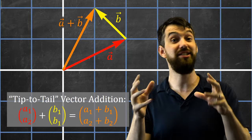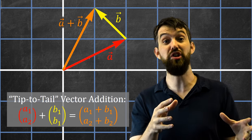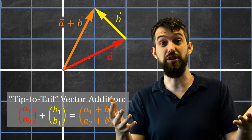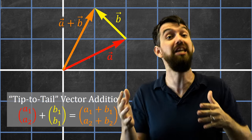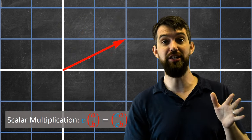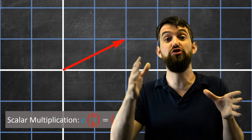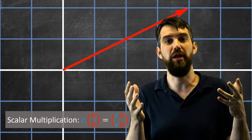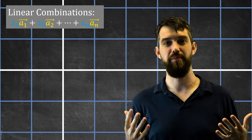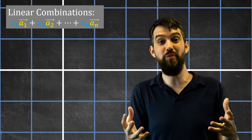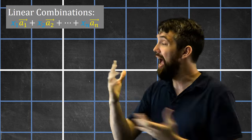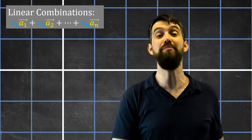In the first video on our study of vectors, we saw that there were two different ways to combine vectors: adding them via tip-to-tail vector addition, or scalar multiplication where I take one vector and stretch its length out, say by a multiple of two. Now I want to look at the idea of a linear combination, which is basically taking scalar multiplication and vector addition and doing them as many times as I wish.